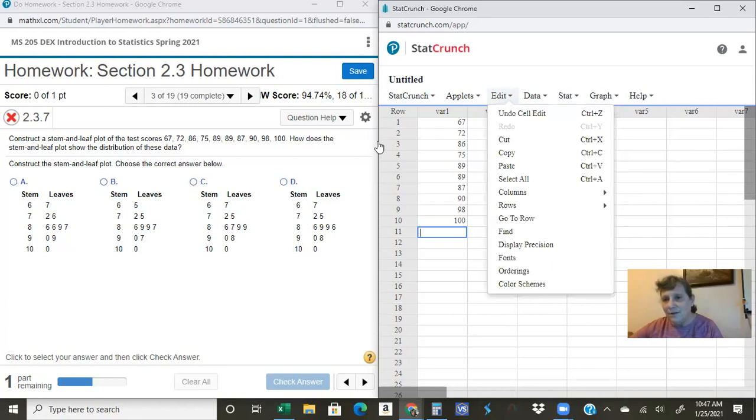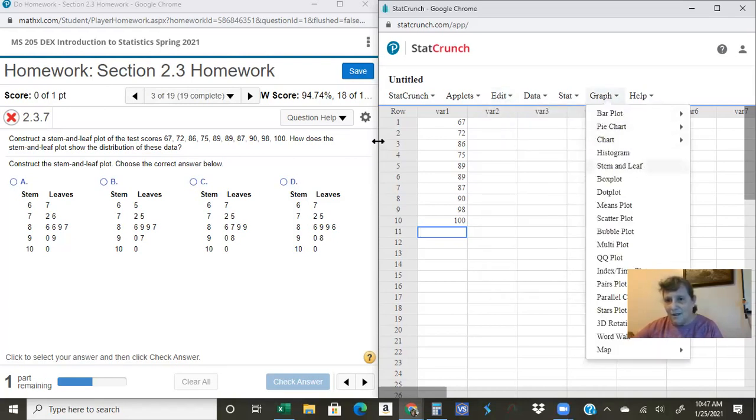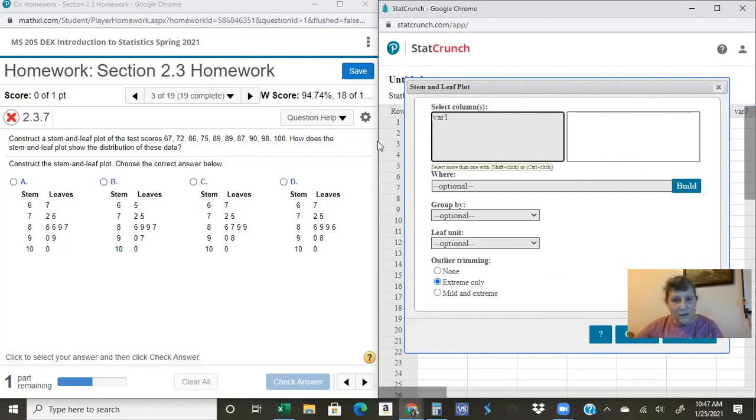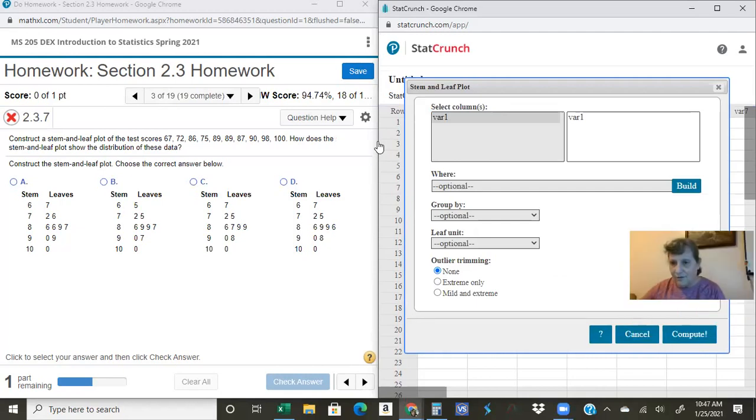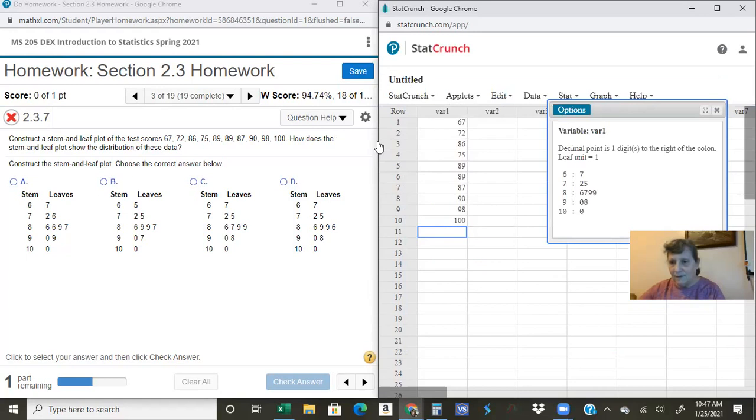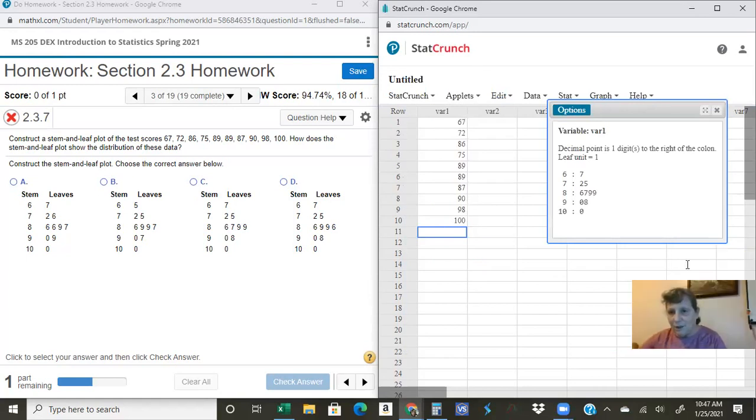But if I come over here to graph, stem and leaf, I've only got one column here so that's kind of a done deal. Where on the outliers I want to keep this at none. And hit compute. Here's my stem and leaf plot right here. And I could just take this and match it up with one over here and notice that it does match up with this one.